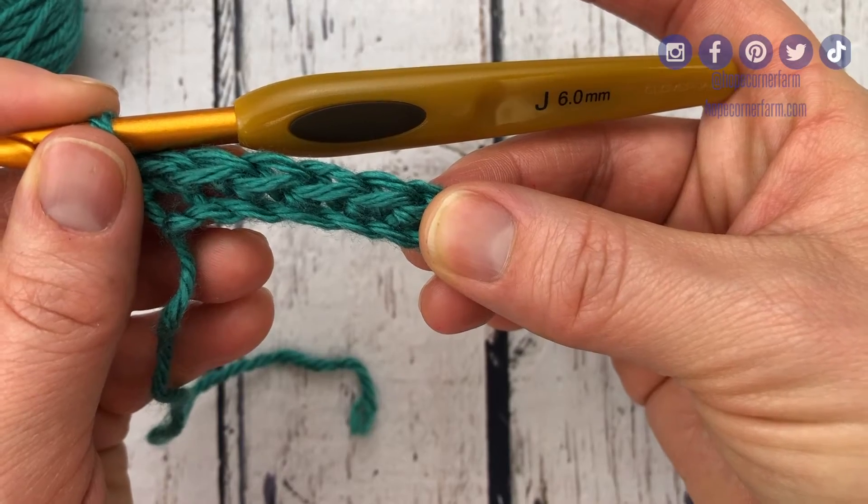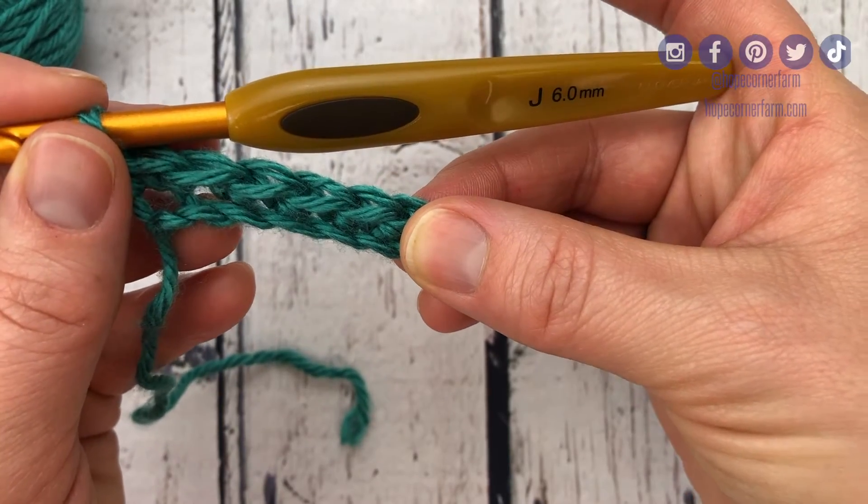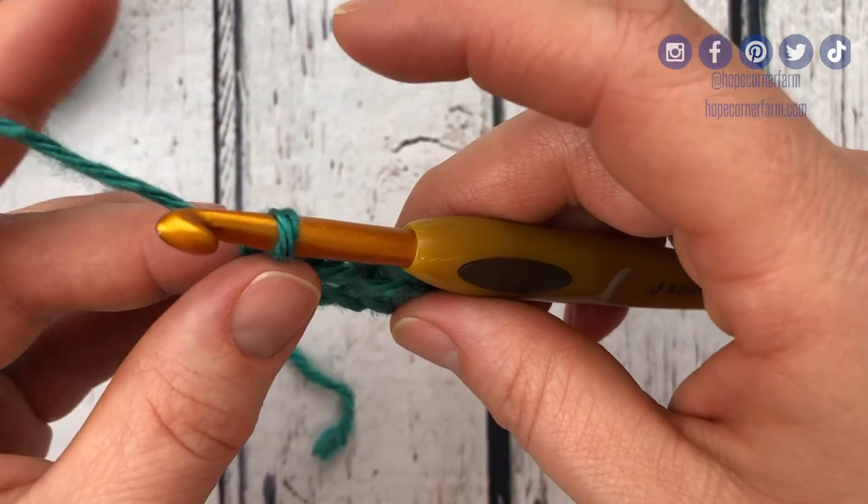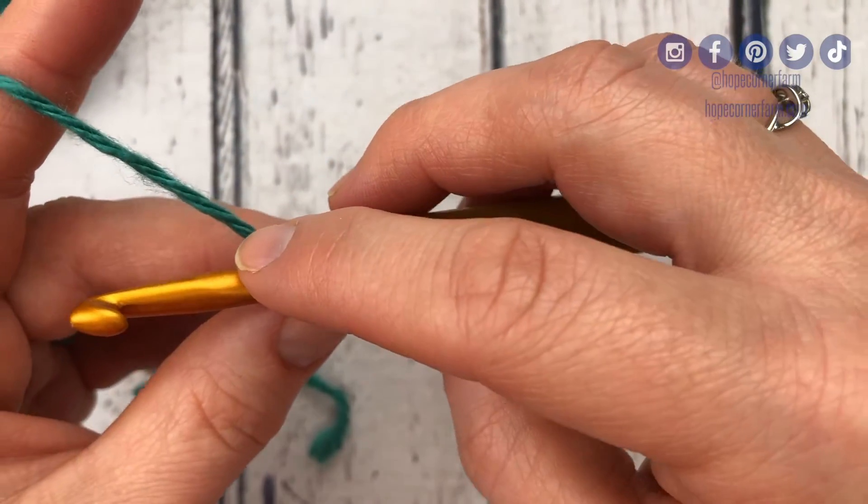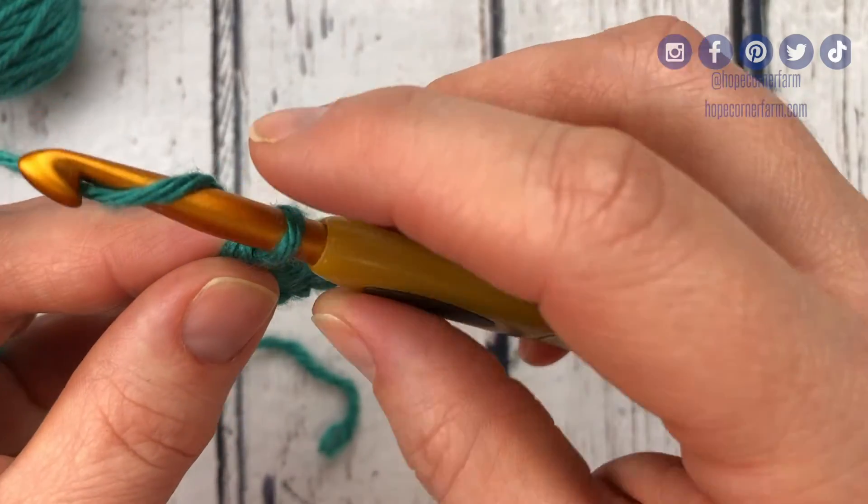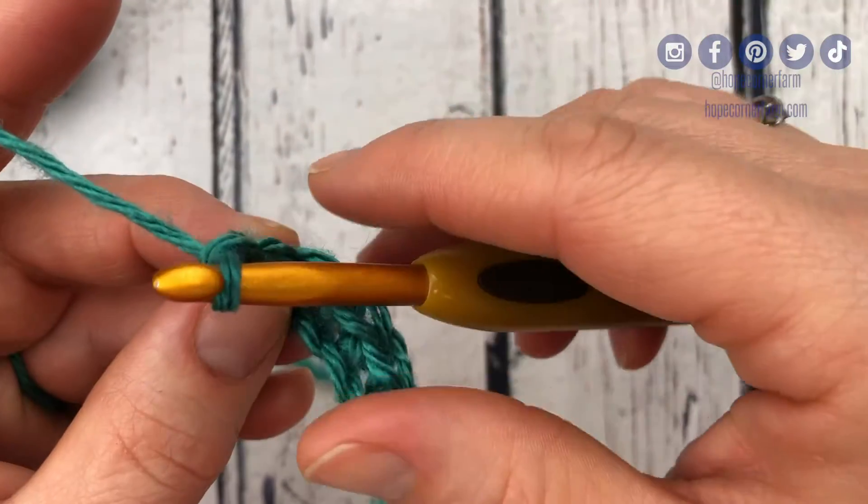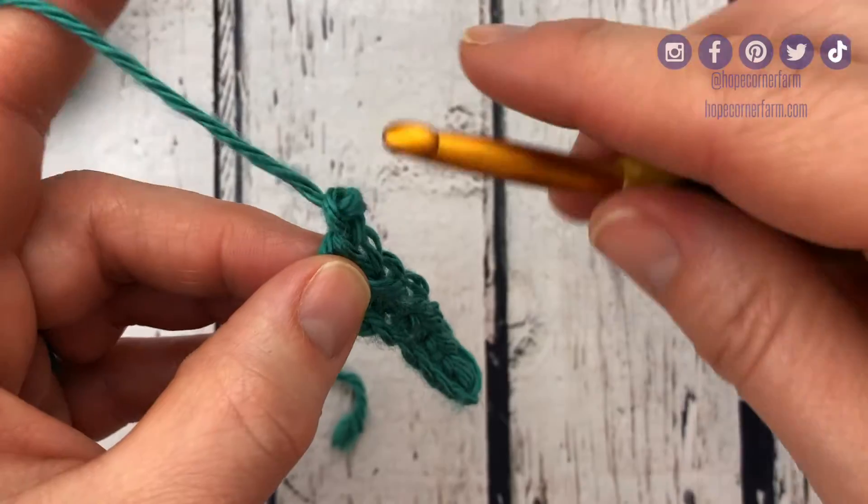Now we're gonna do a second row of single crochet. Usually your pattern will tell you to chain one and then turn. So what that looks like is we're gonna do the rotating yarn over. We're gonna rotate and pull through, and that's a chain one.